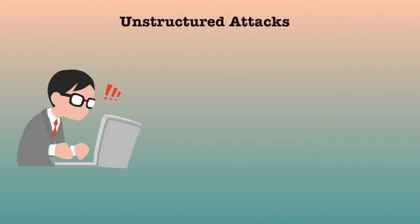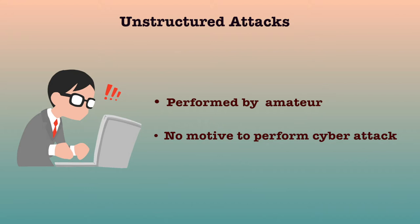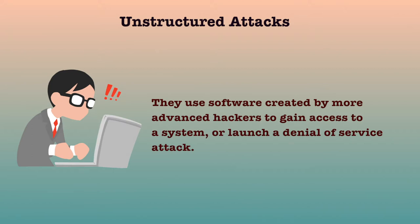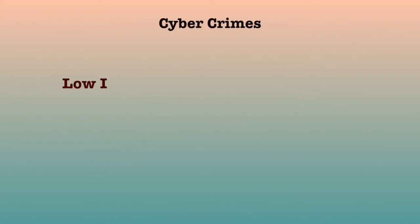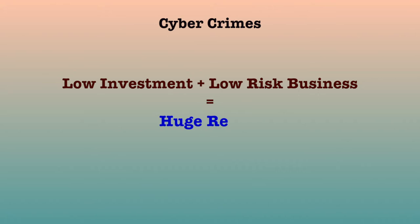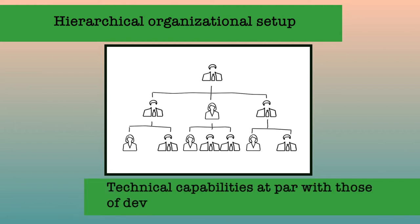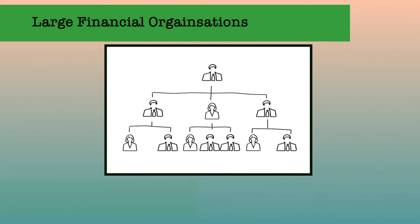Unstructured attacks are generally performed by amateurs who don't have any predefined motives to perform the cyber attack. Usually, these amateurs try to test a tool readily available over the internet on the network of a random company. Cyber crimes have turned out to be a low-investment, low-risk business with huge returns. Nowadays, these structured crimes are highly organized. There is a perfect hierarchical organizational setup like formal organizations, and some of them have reached a level of technical capabilities at par with those of developed nations. They are targeting large financial organizations, defense and nuclear establishments, and are also into online drug trading. The roles of all people in the hierarchy remain changing based on opportunity.